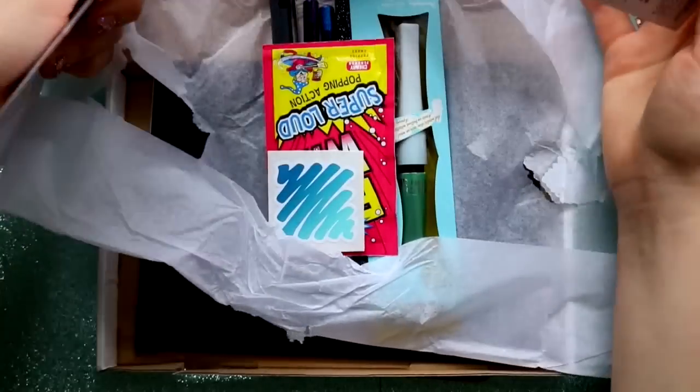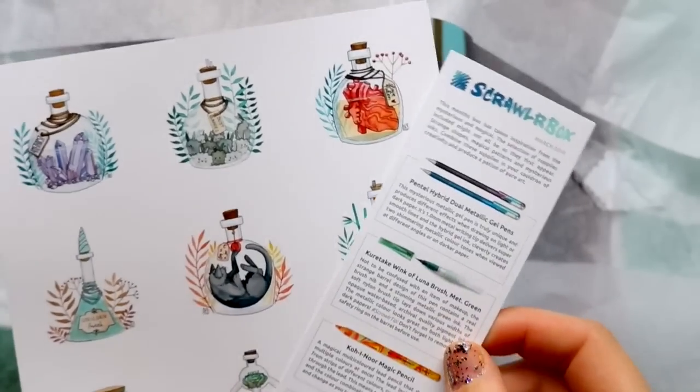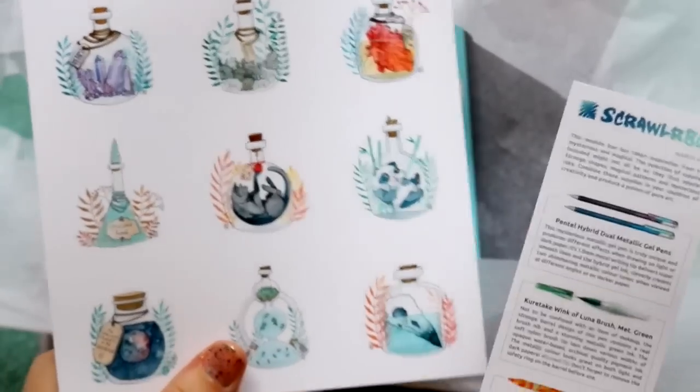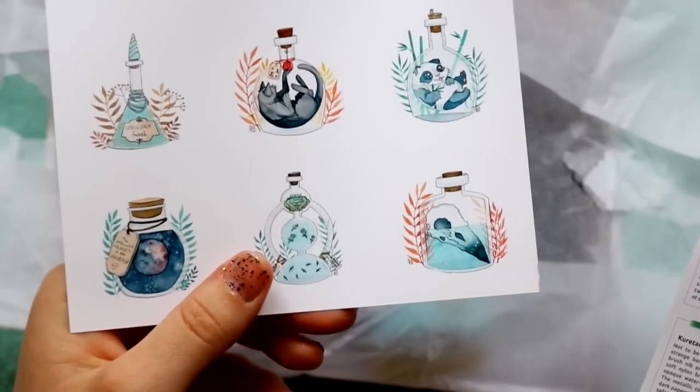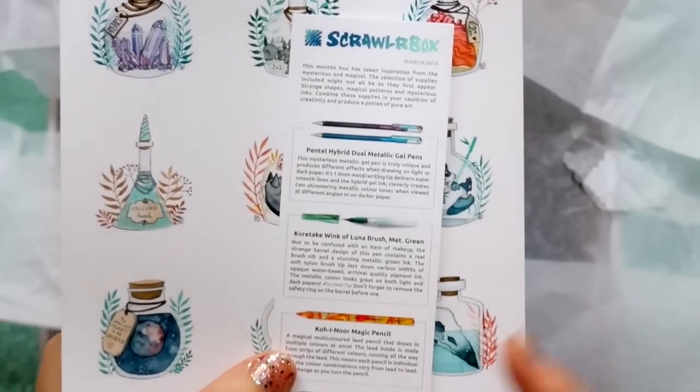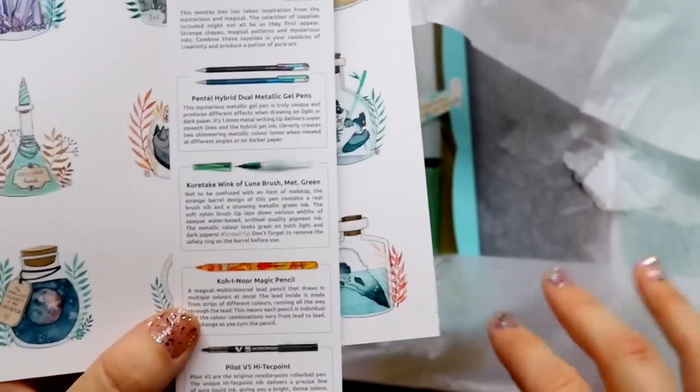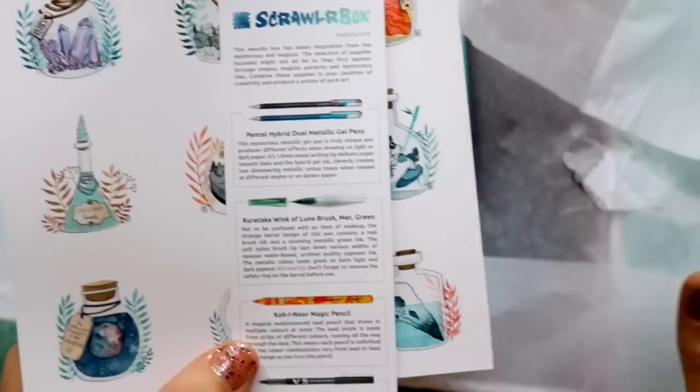We got pop rocks! So the first two things that ScrawlrBox sends to us in this box happens to be this cute little print that has all these magical bottles on it with all these little itty bitty critters, and then they also send us a bookmark that has all the art supplies that are given to us in this particular box so we can look at names and what they do.